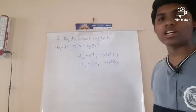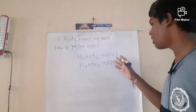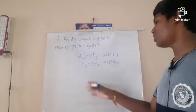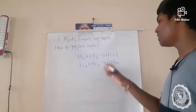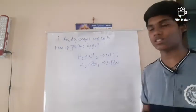When hydrogen reacts with chlorine gas, it forms hydrochloric acid, and when hydrogen reacts with bromine gas, it forms hydrobromic acid.